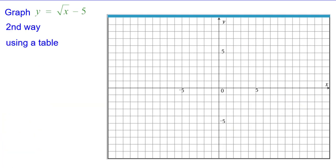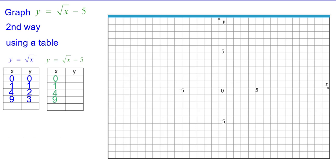The second way is using a table. We would start with the y equals the square root of x table. And then we're going to subtract 5 from each of the y coordinates because that's what's in the equation.